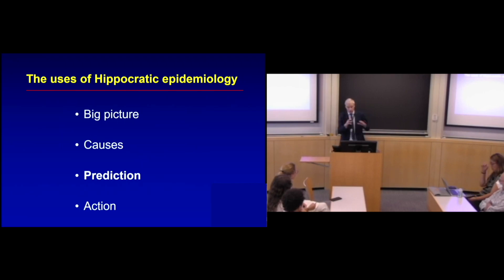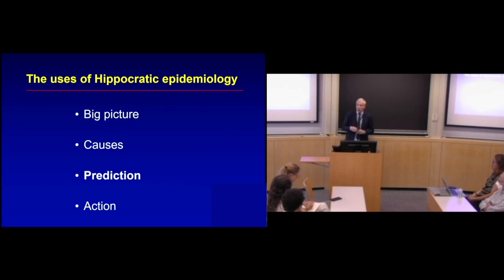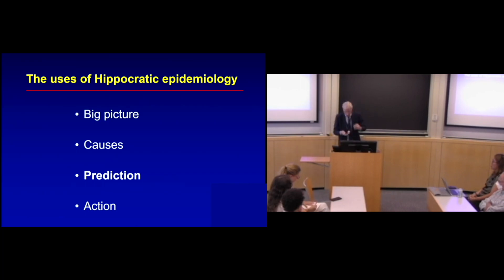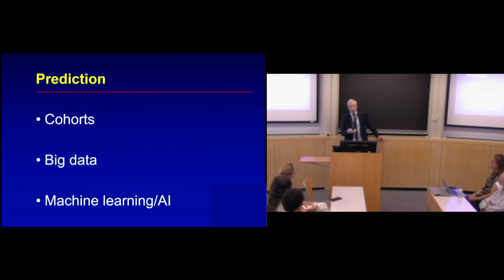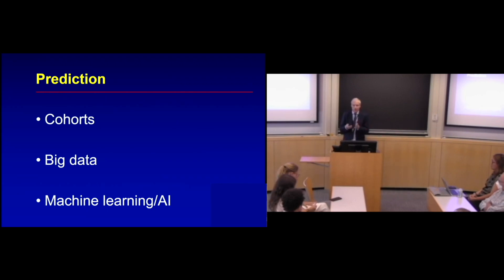That brings us to prediction. On causes, from the method side we went from description to analysis; on the substantive side, very many contributions in terms of risk factors, causes, environmental factors — the celebrated case of smoking and lung cancer — but also in genes, very much in the past 20 years. On prediction, I won't discuss big data or AI today — I'll save that for another time — but I would like to make a few comments about cohorts.